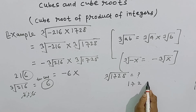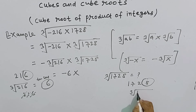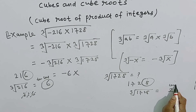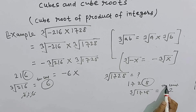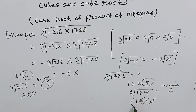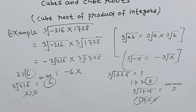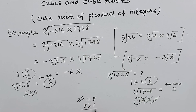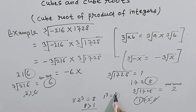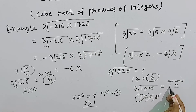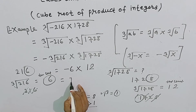1728 का unit digit 8 है, so इसके cube root का unit digit 2 होगा, क्योंकि जब किसी number का unit digit 8 होता है उसके cube root का unit digit 2 होता है। 1728 के units, 10s और 100s place के digits को strike out करने के बाद हमारे पास number 1 बच गया। Largest single digit integer जिसका cube 1 के बराबर है वो 1 है। So cube root of 1728 = 12. Final answer is equal to minus 72।